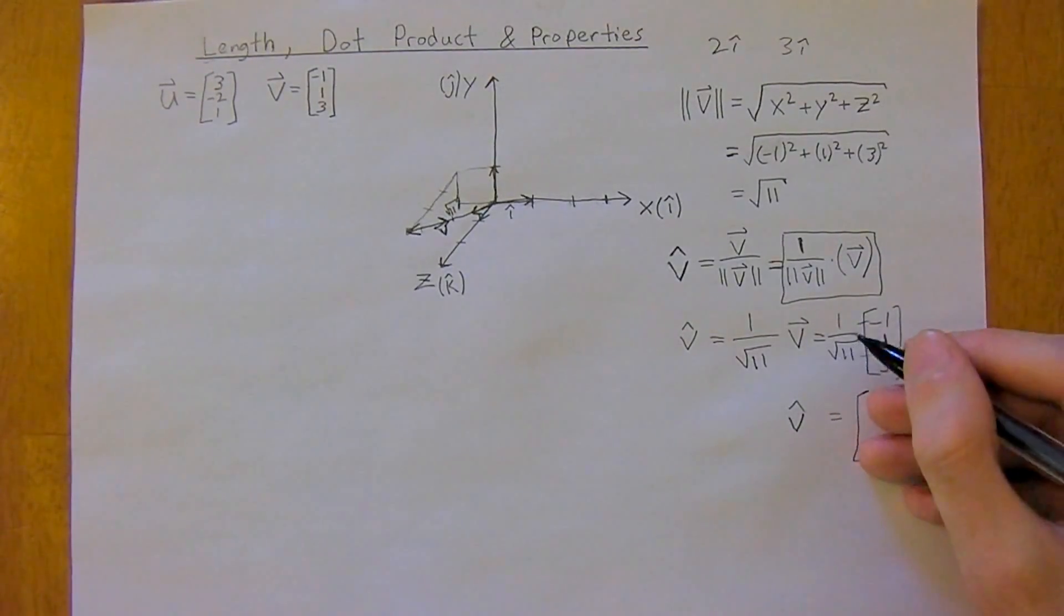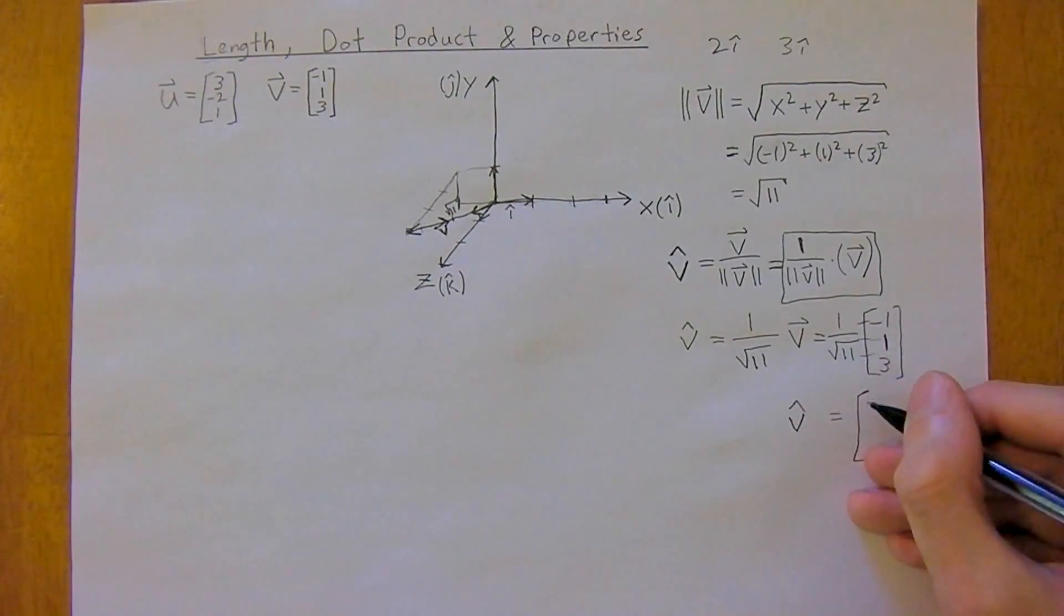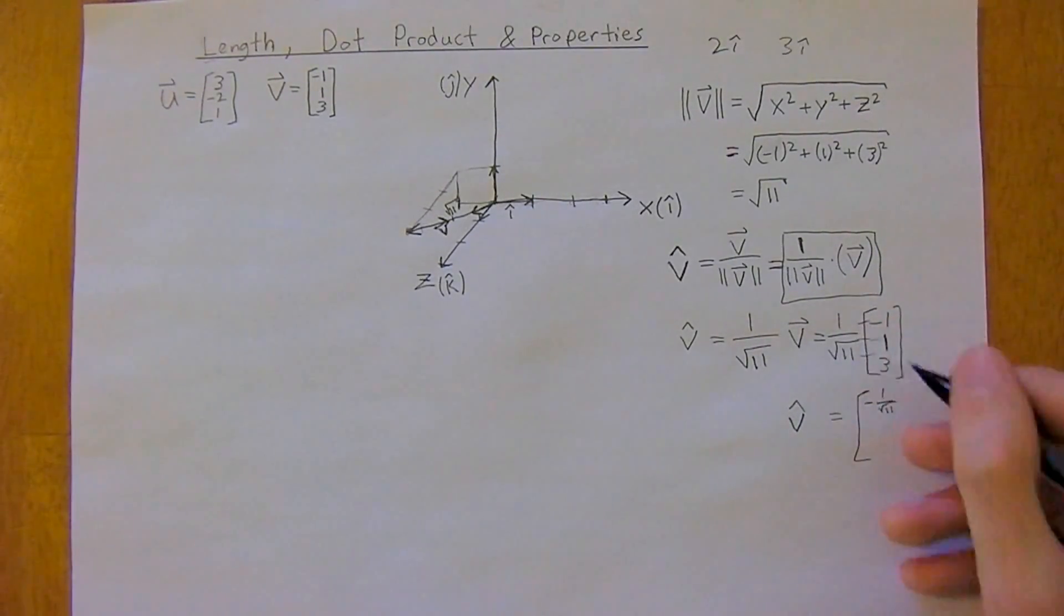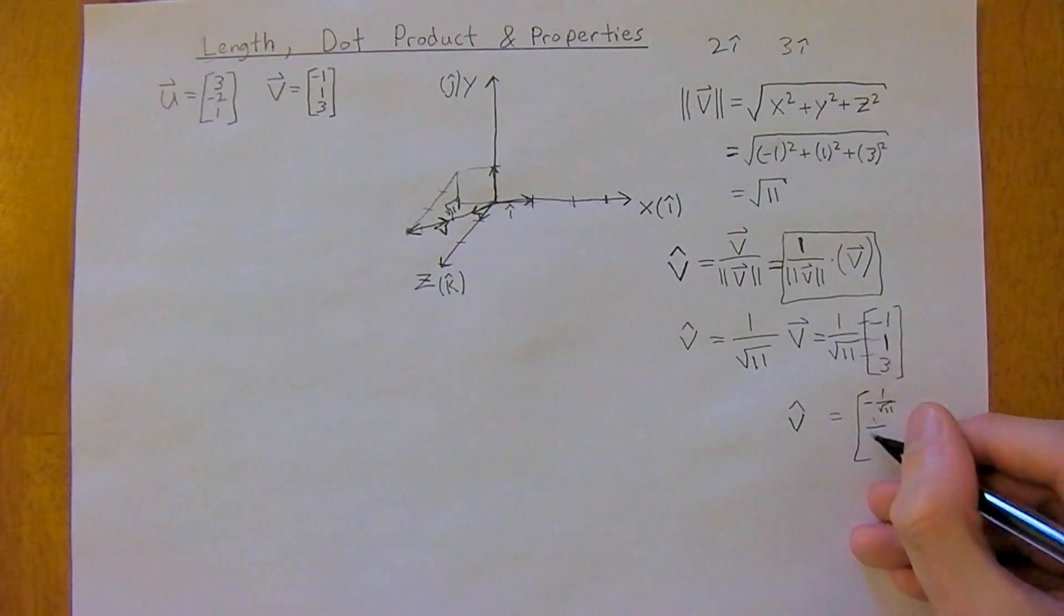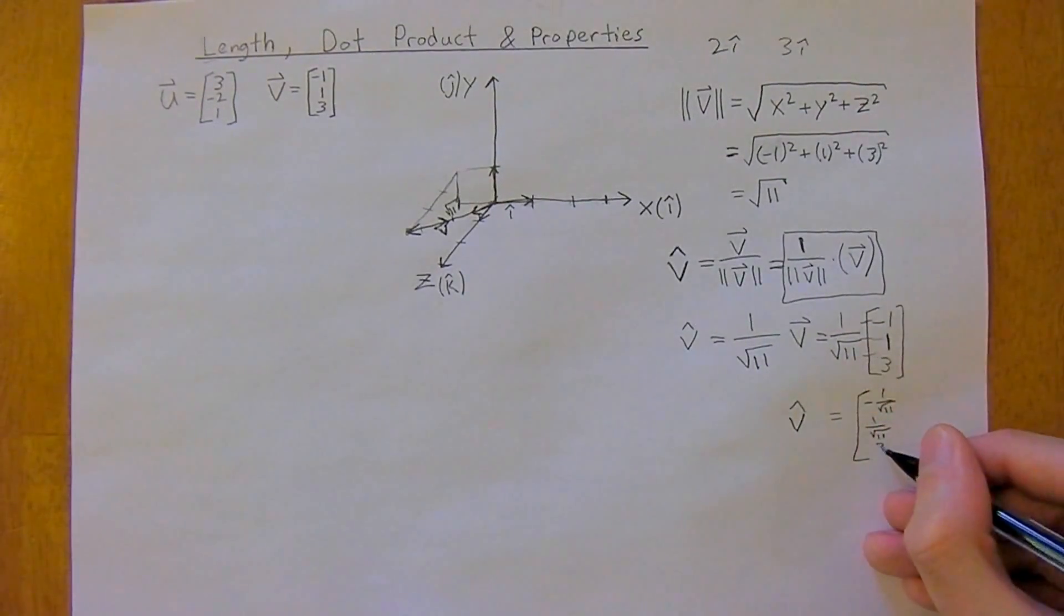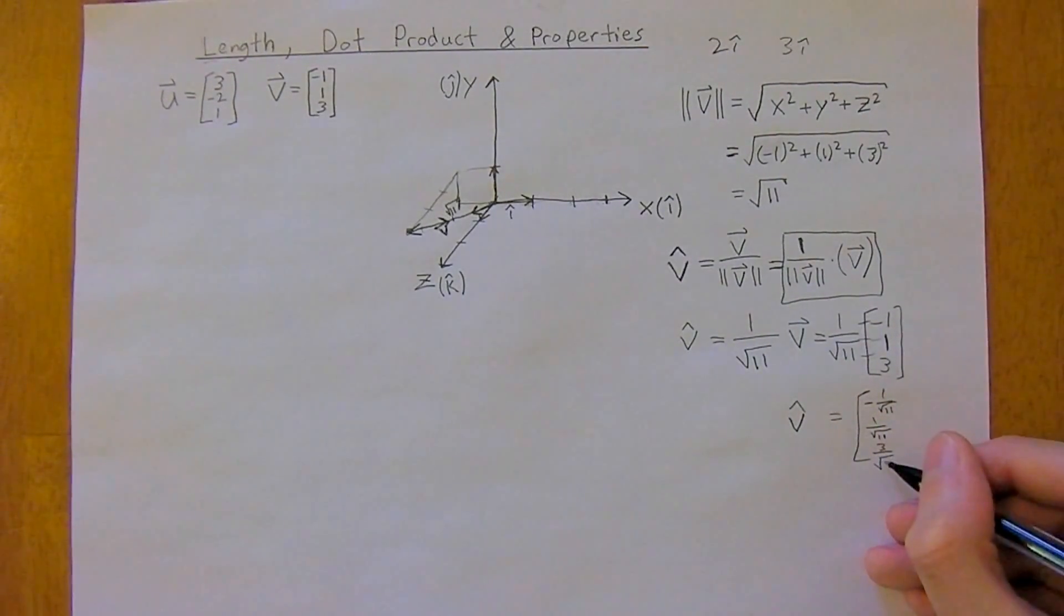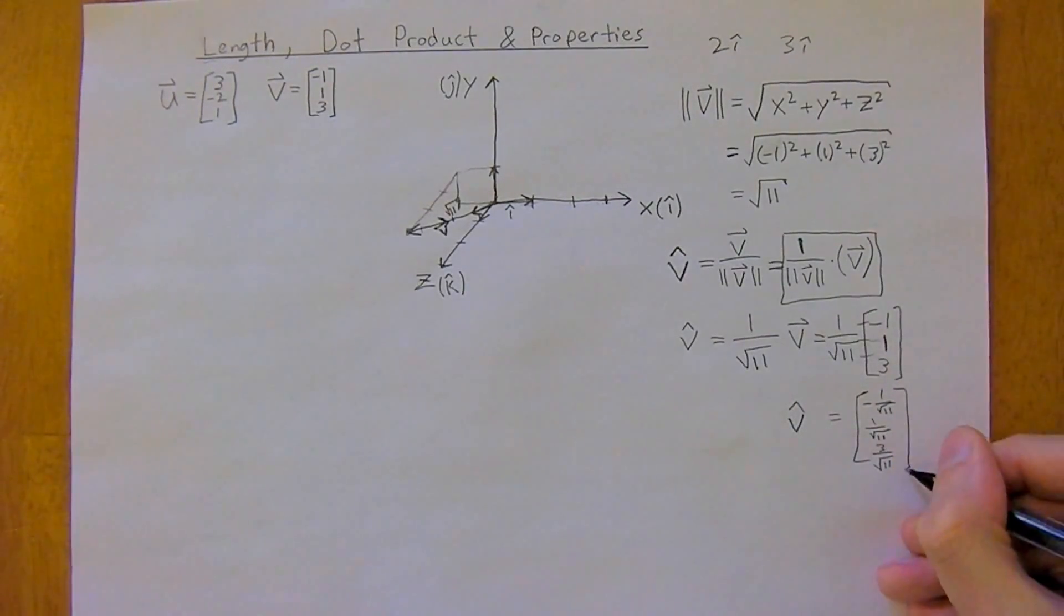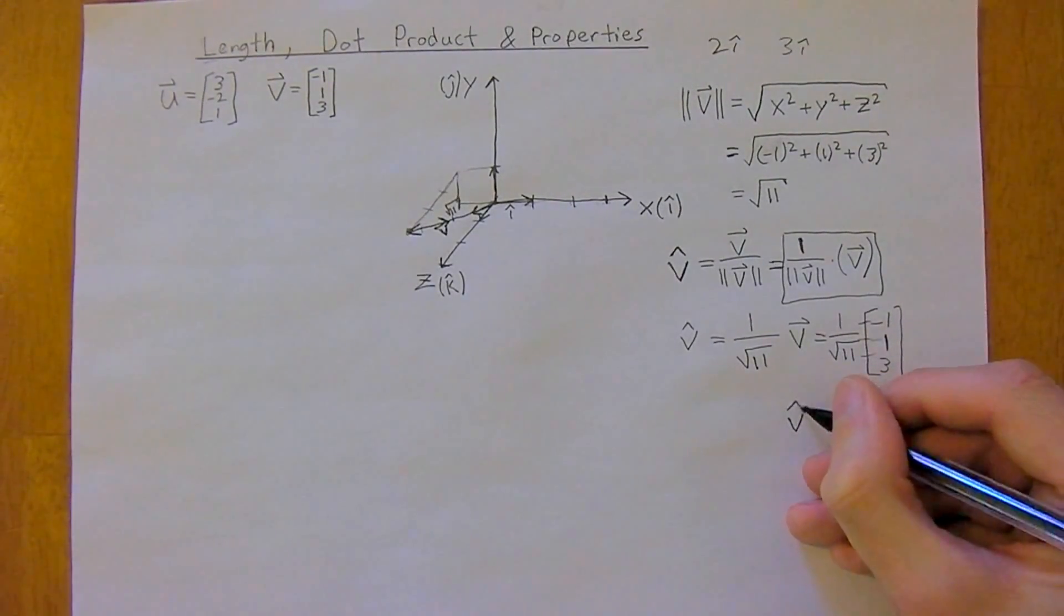So 1 over the square root of 11 times negative 1. So it's going to be negative 1 over the square root of 11. And then we're going to have 1 over, for the y-axis, 1 over square root of 11. Finally, for the z-axis, it's just 3 times 1 over square root of 11. So we'll have 3 over the square root of 11. And that will be our unit vector.